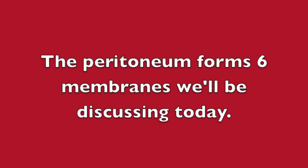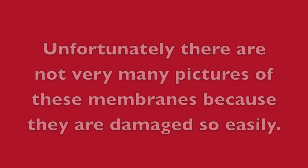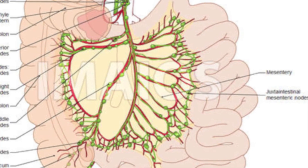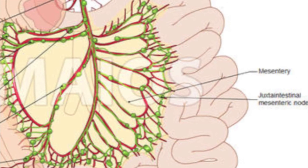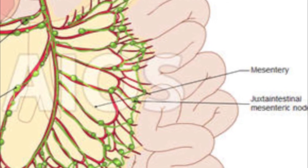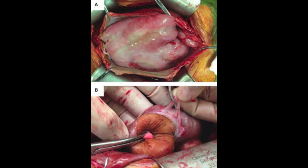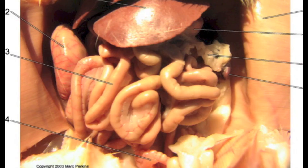The peritoneum forms six membranes we'll be discussing today. Unfortunately, there are not very many pictures of these membranes because they are damaged so easily. The mesentery proper is a double layer of peritoneal membrane which extends from the body wall to the internal organs. The falciform ligament is a layer of tissue which extends from the body wall and diaphragm to the liver. The parietal peritoneum is a shiny membrane which lines the body wall of the abdominal cavity. The visceral peritoneum is a shiny membrane which covers the internal organs.